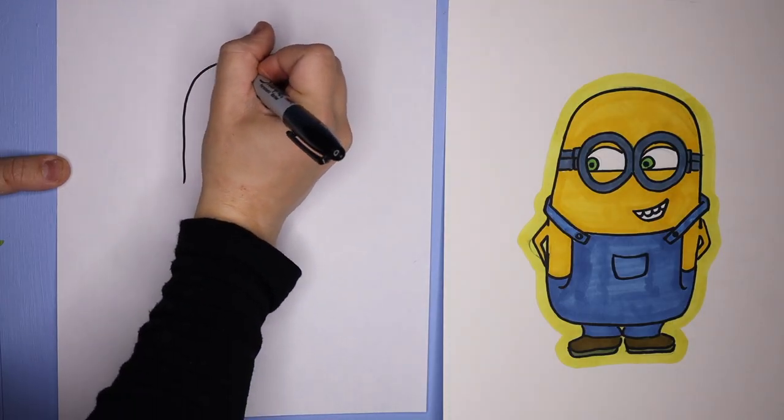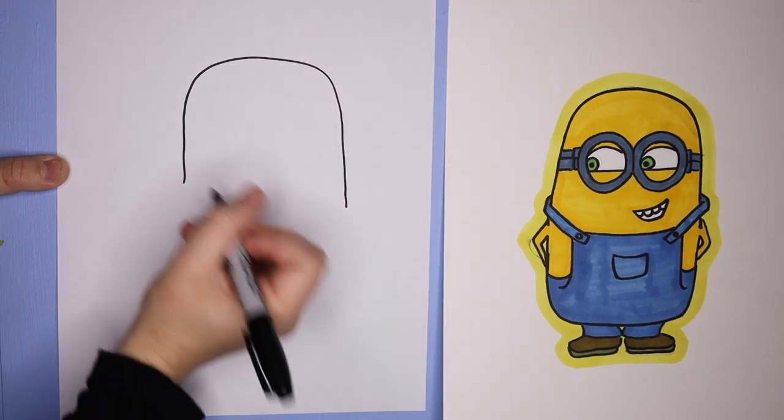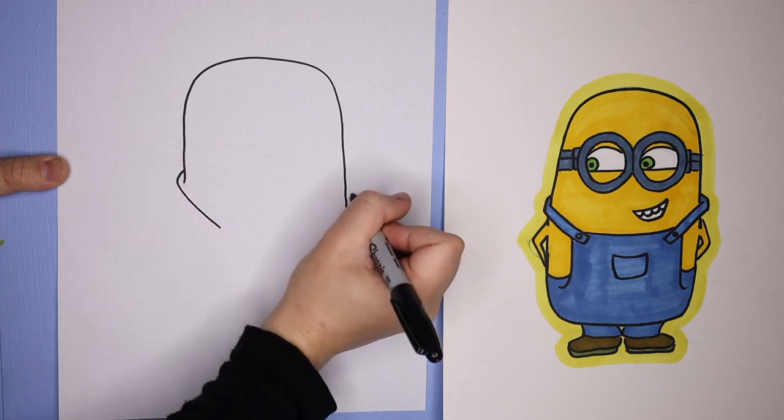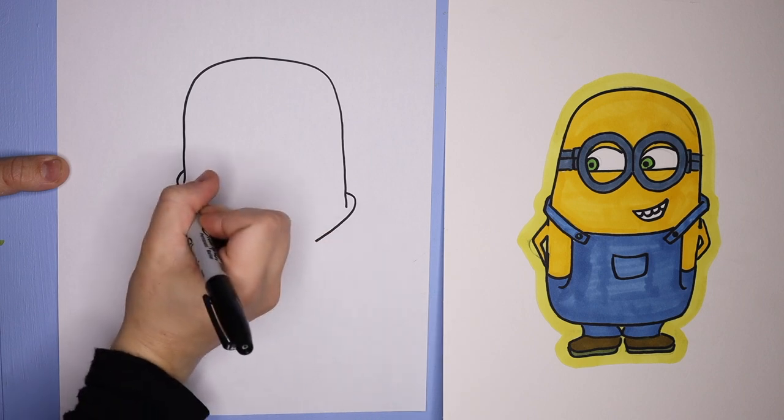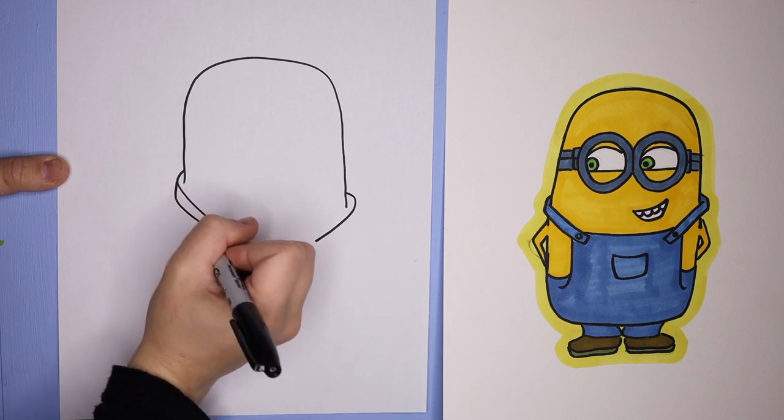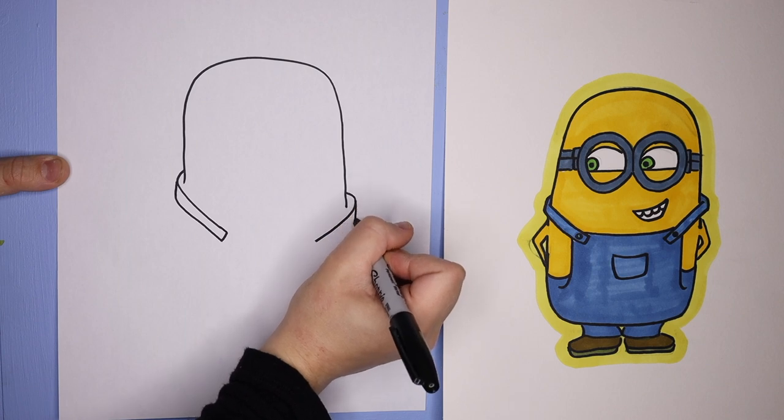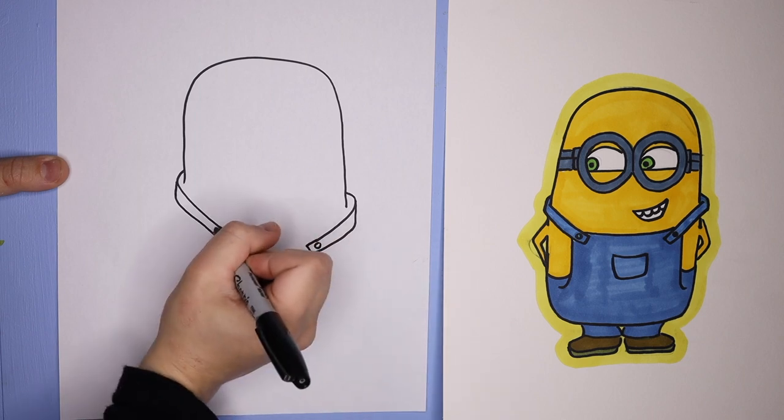So for our minion, we're just gonna start with the top of the head, so you can do a nice big long rainbow just like that. Then we're gonna make the little overall straps, so we're gonna curve out from the sides of the rainbow and then in towards the center. Then we're gonna draw a line going parallel down that first line that we just drew, and then you can do the little buttons.